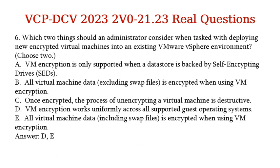Question 6. Which two things should an administrator consider when tasked with deploying new encrypted virtual machines into an existing VMware vSphere environment? (Choose two.) A. VM encryption is only supported when a data store is backed by self-encrypting drives (SEDs). B. All virtual machine data, excluding swap files, is encrypted when using VM encryption. C. Once encrypted, the process of unencrypting a virtual machine is destructive. D. VM encryption works uniformly across all supported guest operating systems. E. All virtual machine data, including swap files, is encrypted when using VM encryption. Answer: D, E.